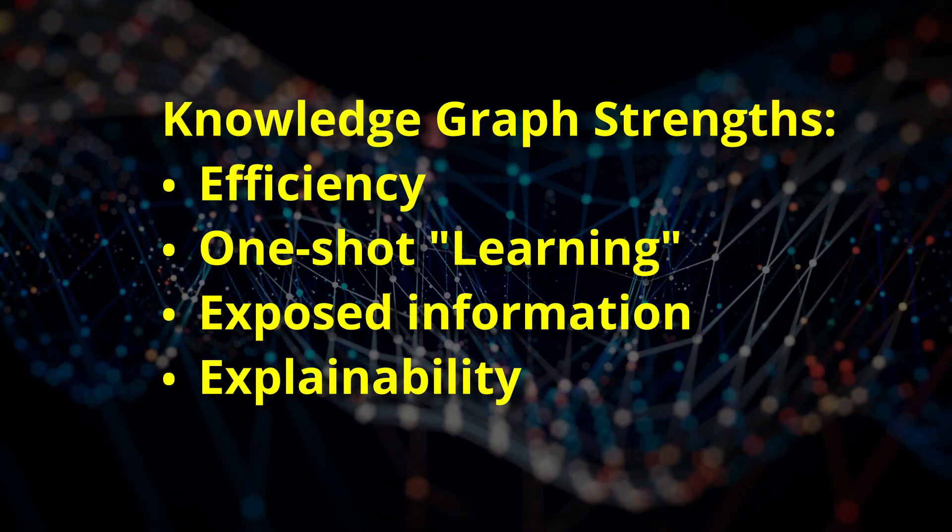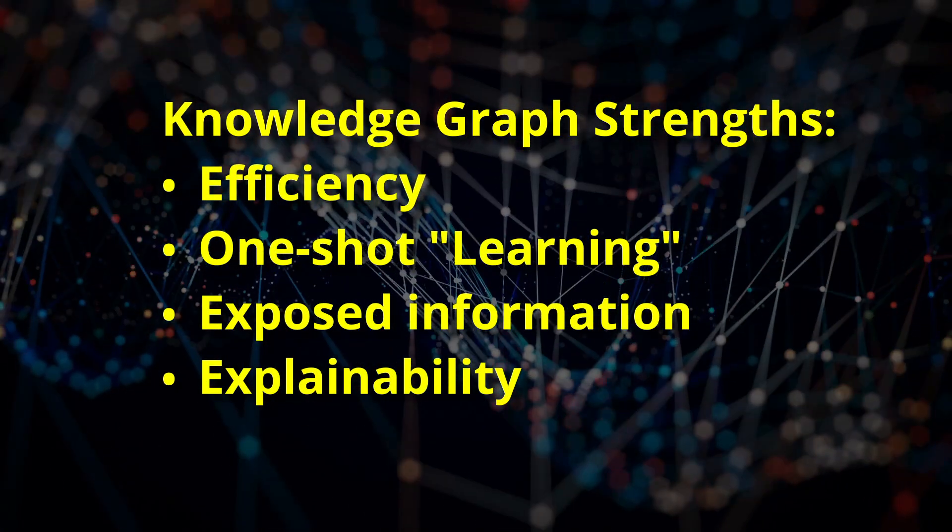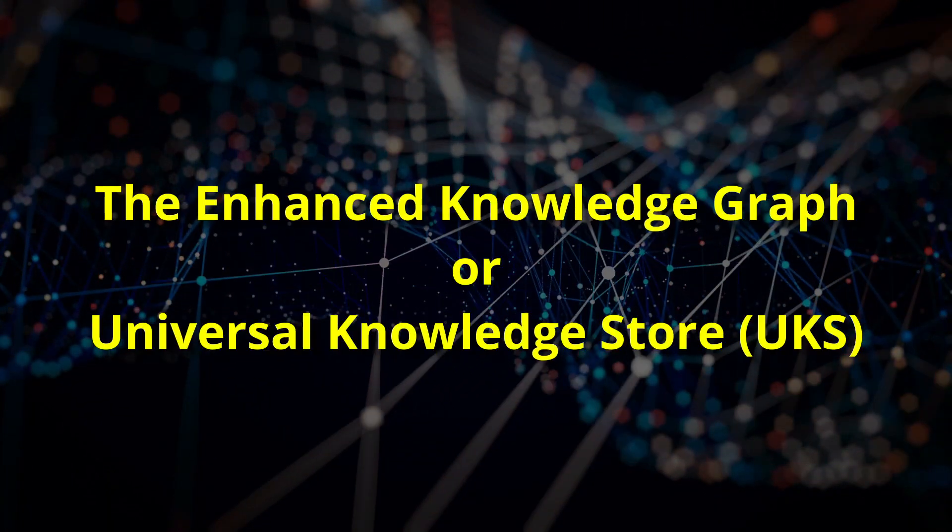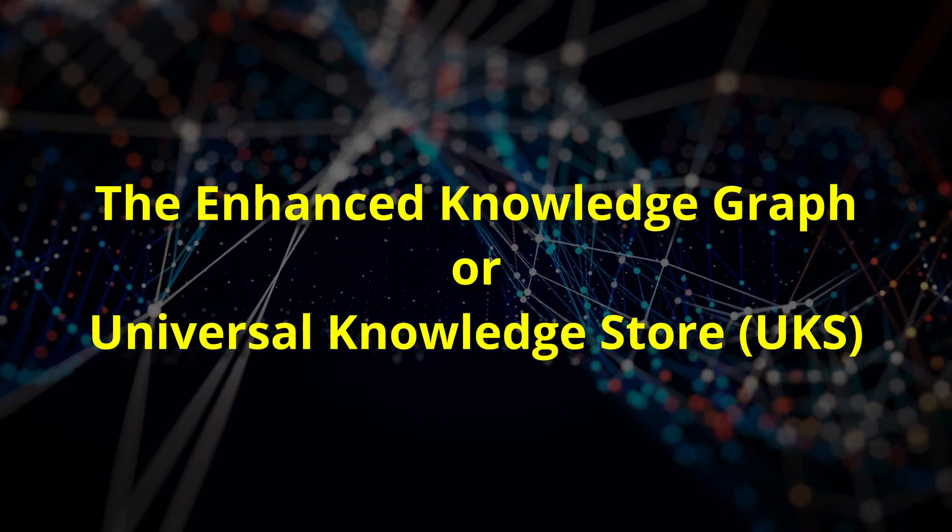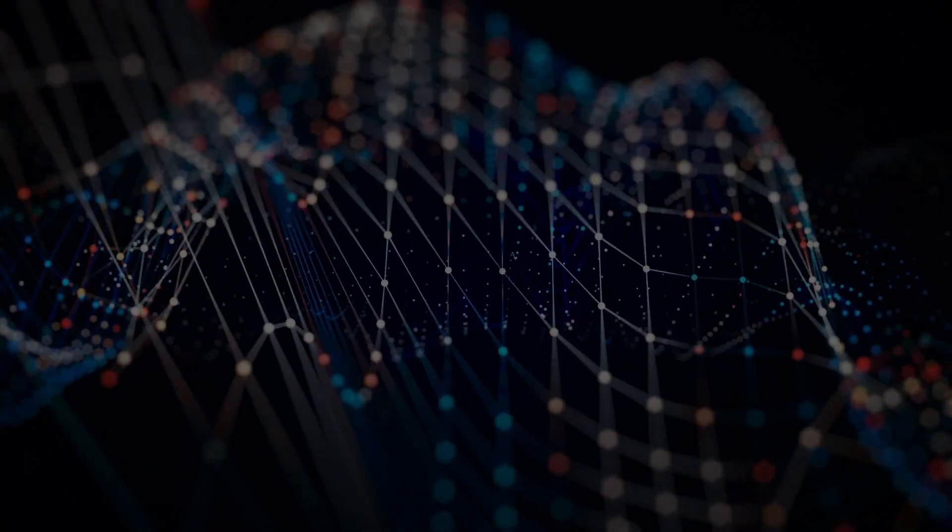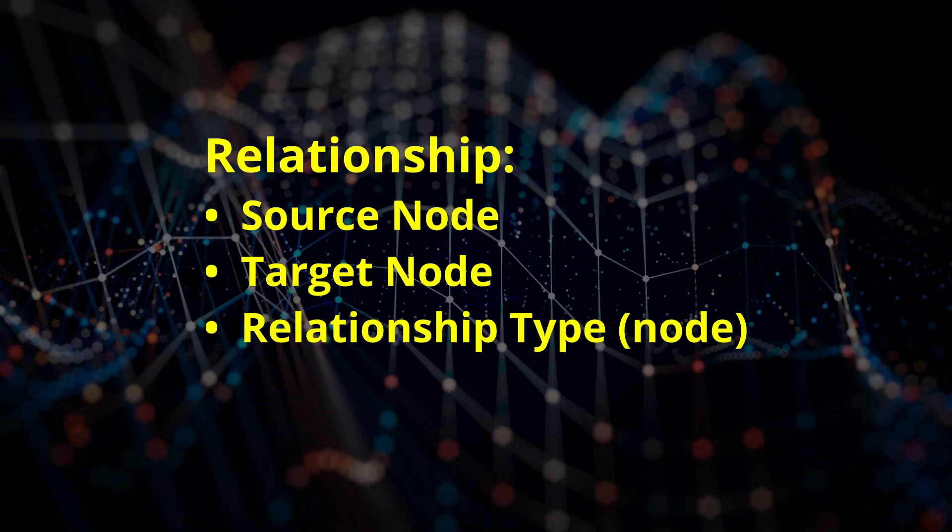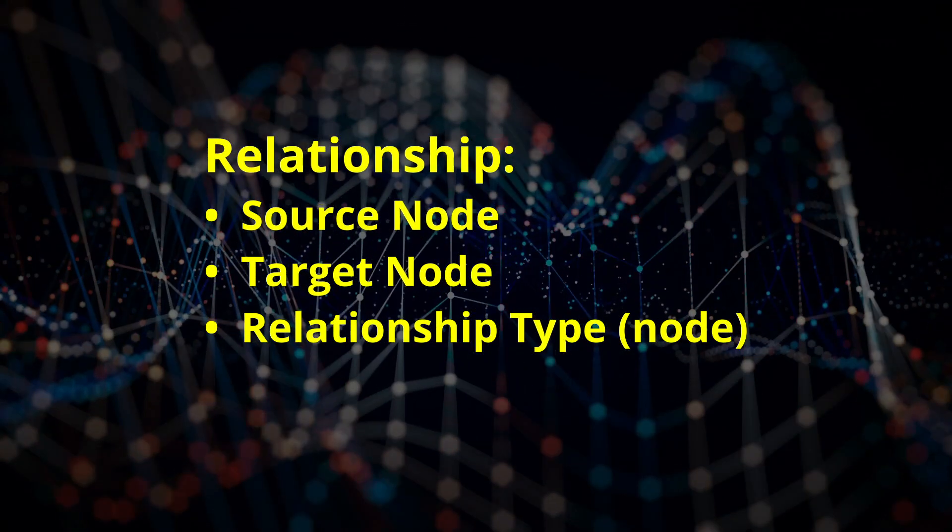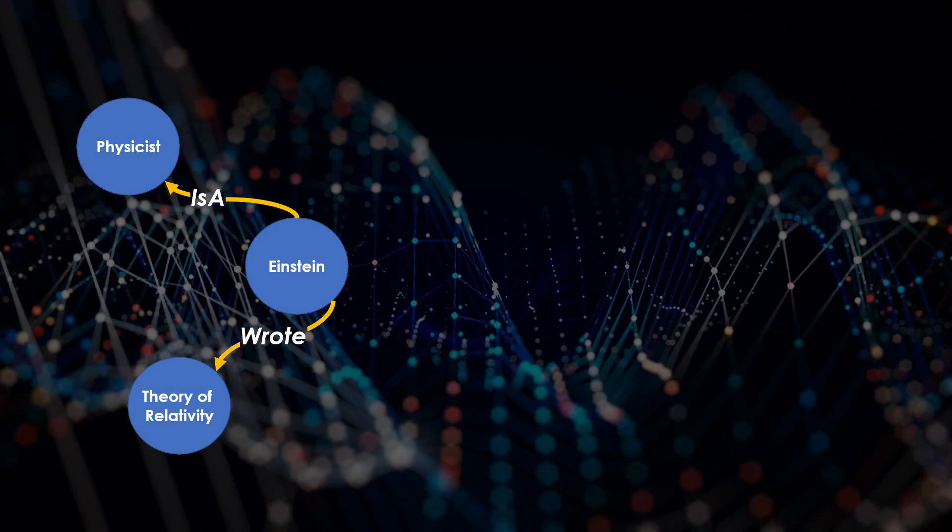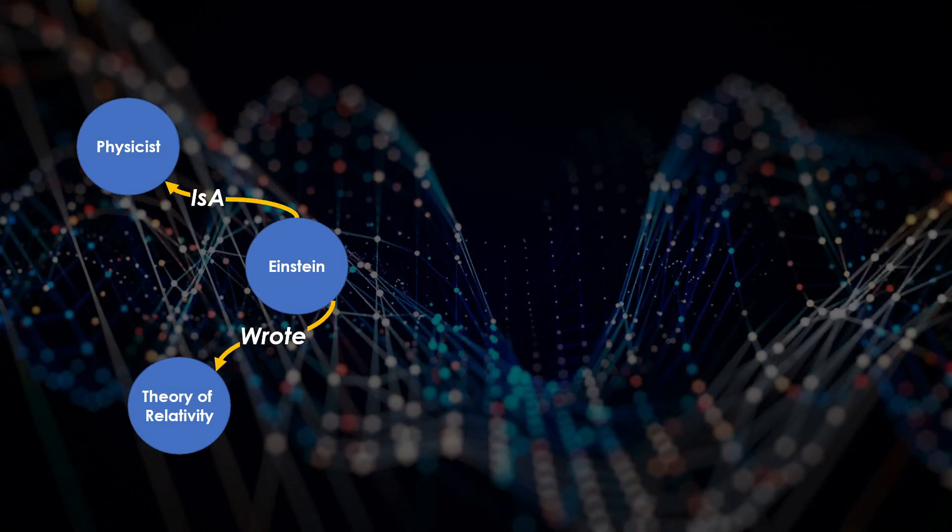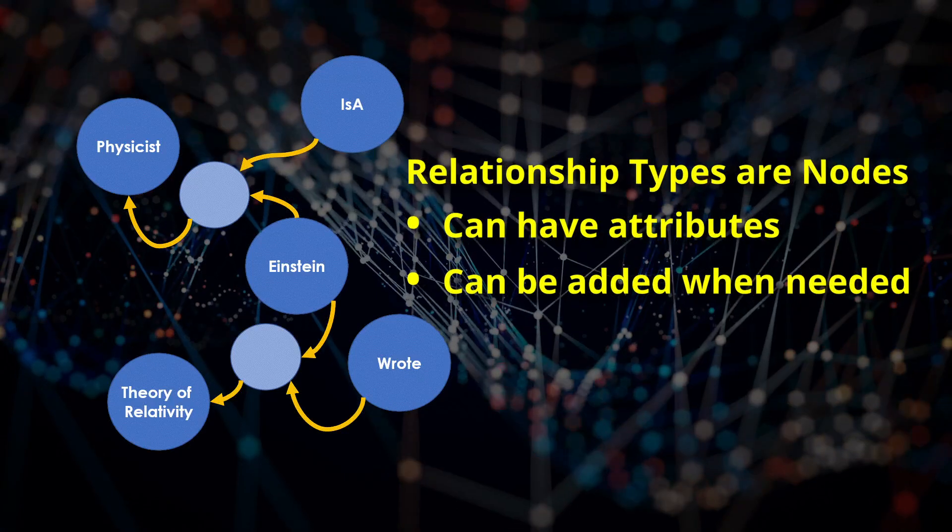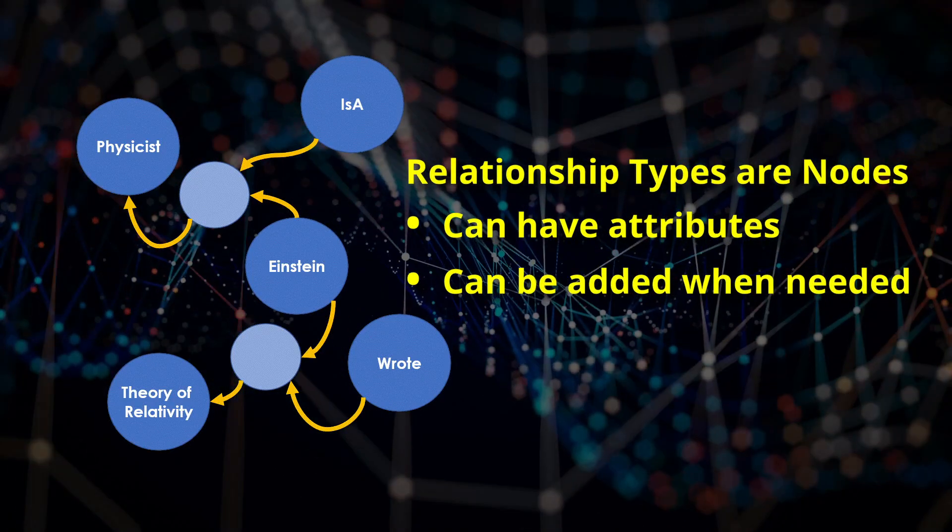This structure allows for powerful reasoning and inference, which is where the enhanced Knowledge Graph comes in. Let's look at the features the enhanced Knowledge Graph brings to the table. Any relationship has three components: a source node, a target node, and a relationship type. Unique to this approach, relationship types are nodes too. Thus, they can have attributes, and new relationship types can be added whenever needed.